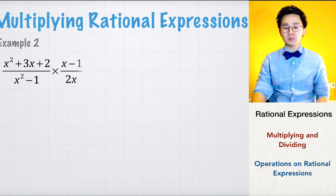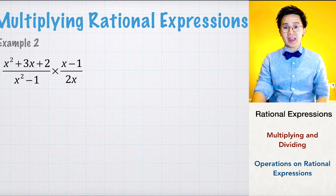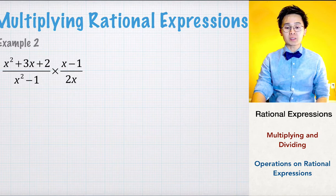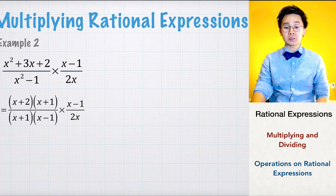In the second example, we have rational expressions that we can simplify by factoring. The first fraction has x squared plus 3x plus 2 in the numerator and x squared minus 1 in the denominator — both factorable. The numerator factors into x plus 2 times x plus 1, and the denominator, which is a difference of two squares, factors into x plus 1 times x minus 1.